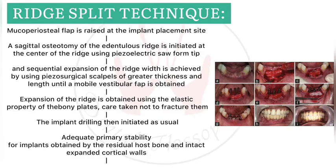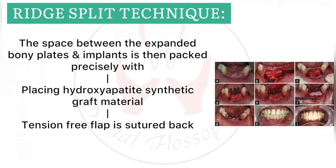In ridge split technique, a mucoperiosteal flap is raised on the planned implant side. A sagittal osteotomy of the edentulous ridge is performed with a piezoelectric saw, followed by sequential expansion of the ridge using the elastic property of bony plates — without causing bone fracture. Implant drilling proceeds as usual; primary stability is obtained by the residual host bone and intact expanded cortical plates. The space between expanded bony plates and implant is filled with hydroxyapatite synthetic graft material, and a tension-free flap is sutured back.